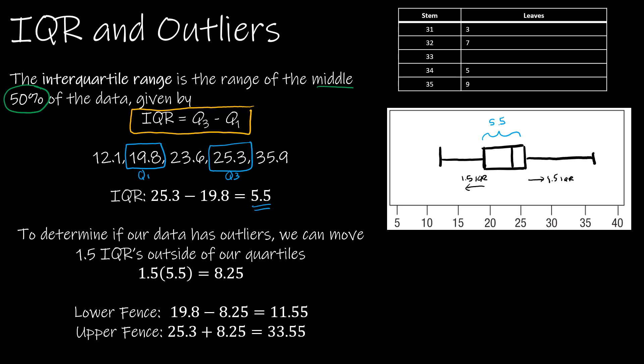I've done the math already here. 1.5 times 5.5 (the IQR) — and we always use 1.5 — gives me 8.25. I took the first quartile and subtracted 8.25 to get a lower fence of 11.55, which is just to the left of our minimum of 12.1. Then I get an upper fence by taking the third quartile and adding 8.25 to get 33.55.